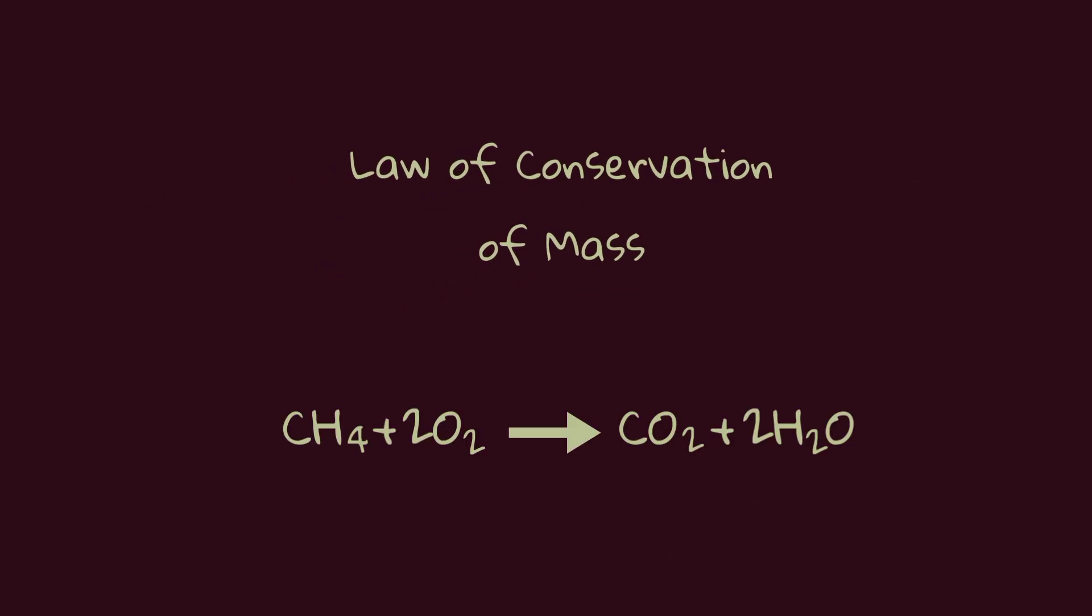From then on, trial and error and mysterious beliefs were replaced by controlled experiments and measurable data. And so, alchemy gradually gave way to modern chemistry. However, this transition was not an end, but a beginning.